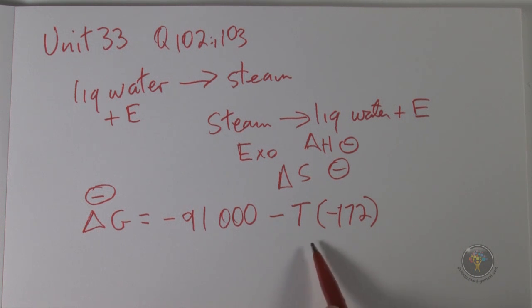But if T is like a thousand or something, if T is high, then it will make this a very big positive number and it will overpower delta H.